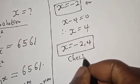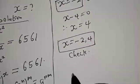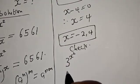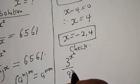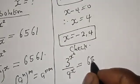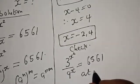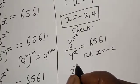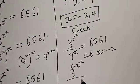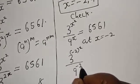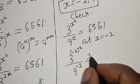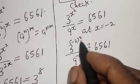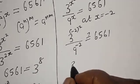Let's check to confirm if our answers are correct. We have the given equation: 3 raised to power s squared over 9 raised to power s is equal to 6561. At s equal to minus 2, we substitute: 3 raised to power (minus 2) squared over 9 raised to power minus 2. Now minus 2 squared is 4, so we have 3 raised to power 4.